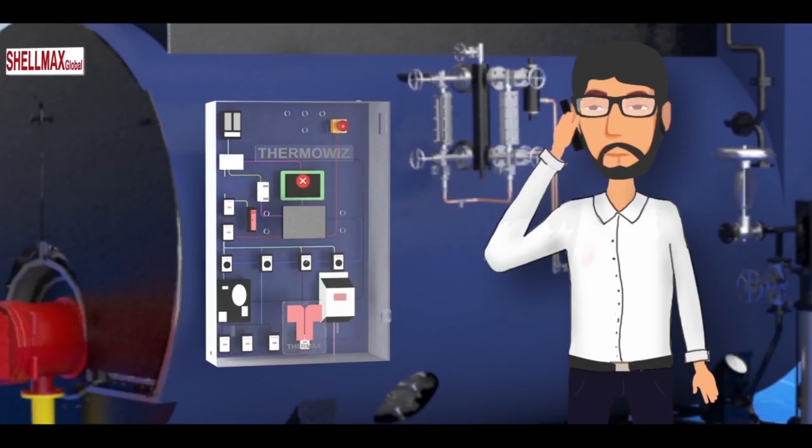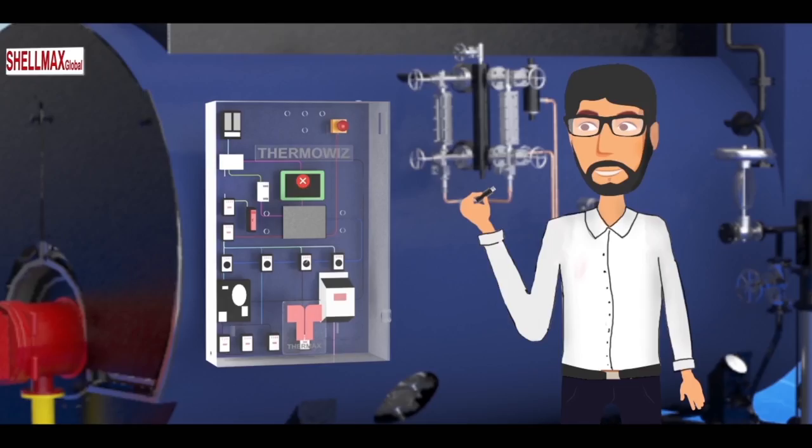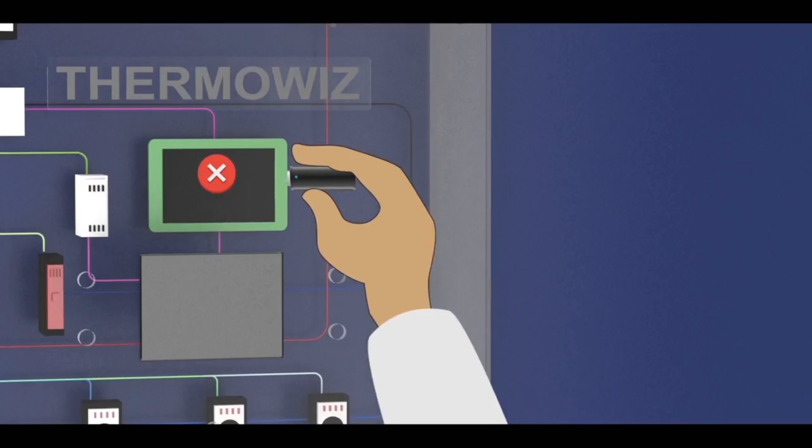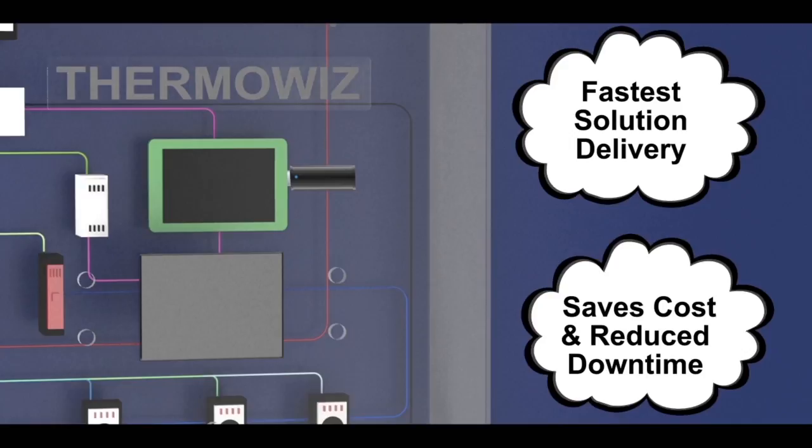Based on requirement at site, software patches can be prepared in back office and emailed to site office. These patches can be simply uploaded into the ThermoWiz with a USB drive. It saves on downtime of equipment due to service engineer unavailability.